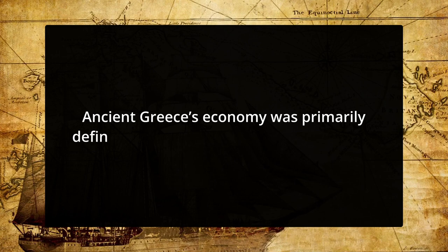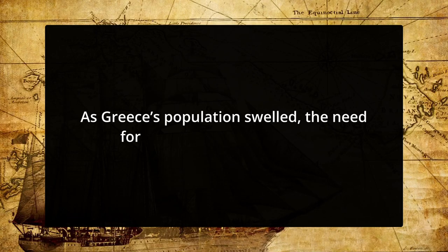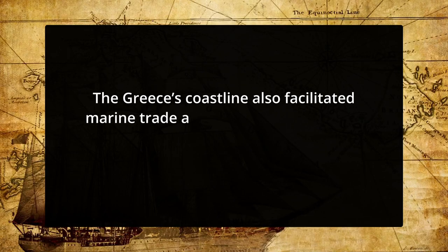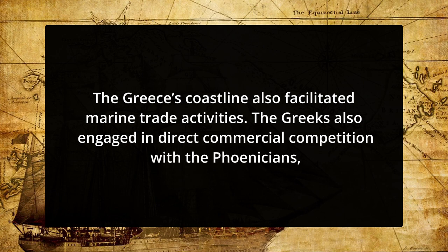Ancient Greek economy was primarily defined by its dependency on foreign items. Due to the poor condition of the soil in Greece, the trade in agricultural products was of particular importance. As Greece's population swelled, the need for additional food increased. It was difficult to cultivate grain due to the country's steep terrain and variable rainfall. The impact of inadequate crop production was largely mitigated by the country's privileged geographical location. Its position in the Mediterranean afforded control over vital seaports and trade routes, as well as the opportunity to expand into bigger markets. The Greeks also engaged in direct commercial competition with the Phoenicians who had previously dominated Mediterranean marine trade.